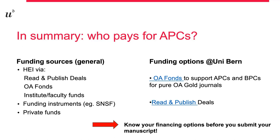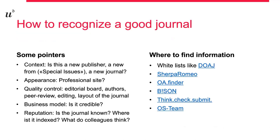Inform yourself about the journal itself and the quota and eligibility criteria of the respective funding instruments. While funders are quite clear about their rules, checking a journal can be quite tricky. If you have doubts about the quality of the journal, the questions on this slide might help you to assess the journal. There are also some tools that can be very useful in the process of choosing or excluding a journal and finding possibilities for funding or embargo information, including two newly integrated tools on our website.